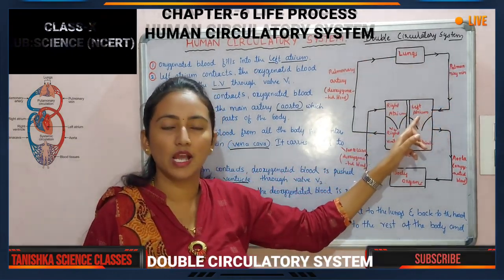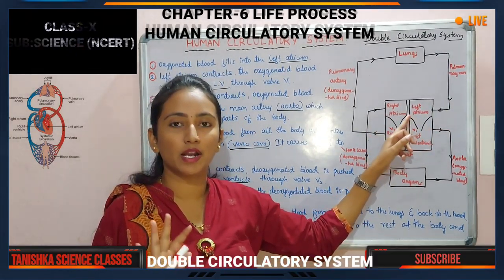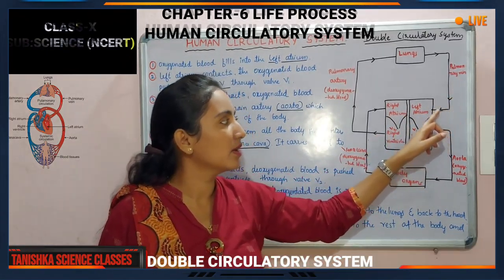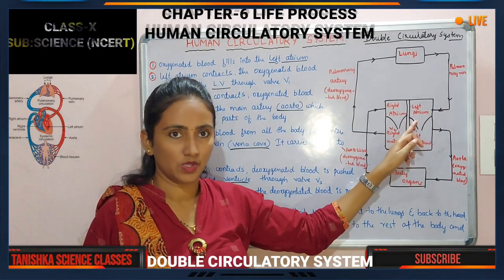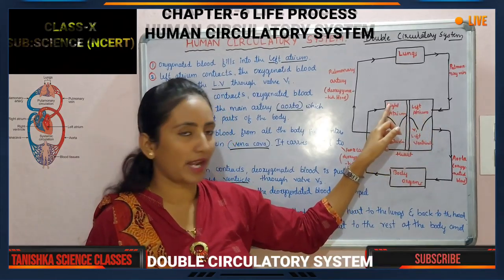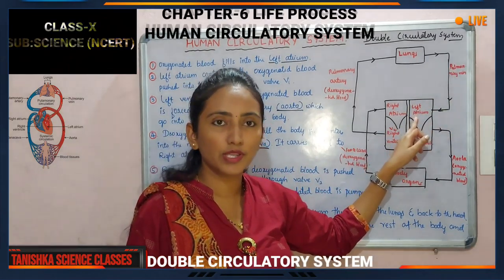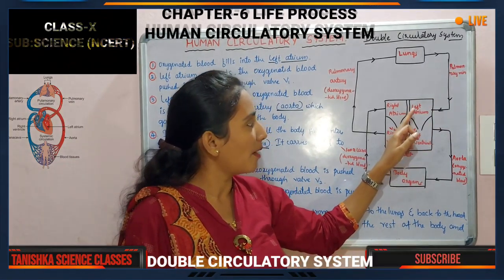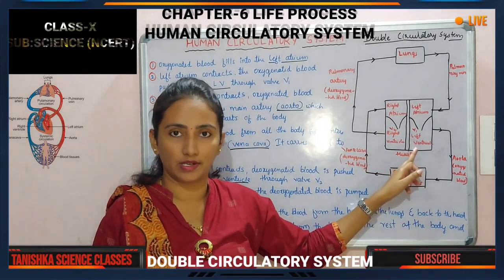The oxygenated blood will transfer through the pulmonary vein. This vein collects the blood from the lungs and brings it to the heart. Our heart contains four chambers. When those four chambers are relaxed, the oxygenated blood from the pulmonary vein fills into the left atrium.